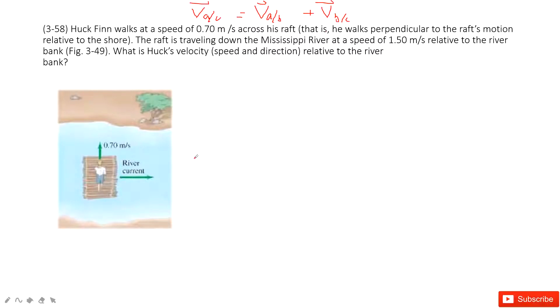Now let's look at the problem. It tells us there is a person who walks at a speed of 0.7 meters per second across the raft in the x direction. So we give it a vector of 0.7 meters per second. At the same time,